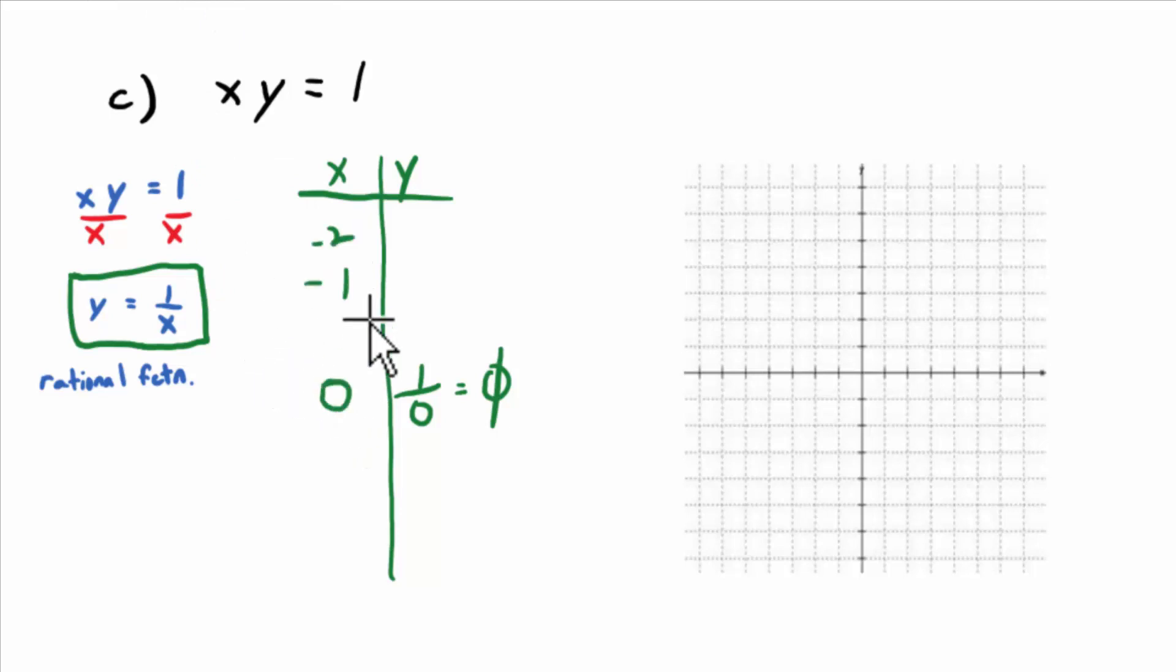So maybe get close to zero, which is, so x equals zero, which is the y-axis, is going to end up being a vertical asymptote because the graph will never cross that line.